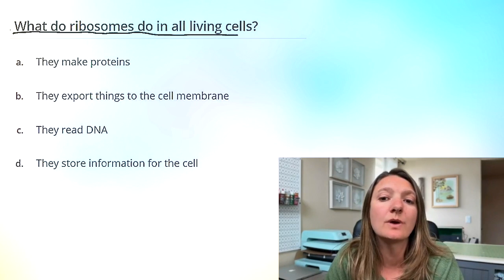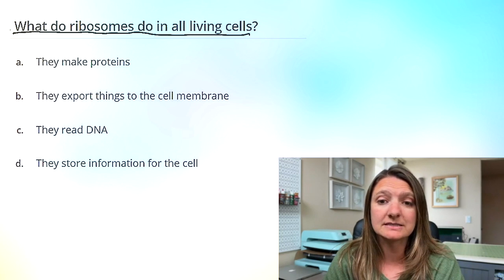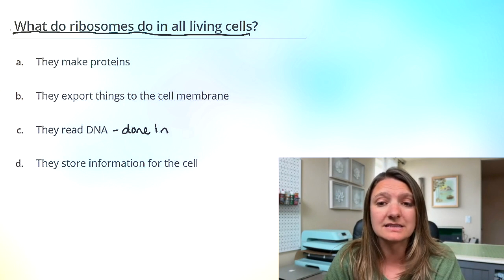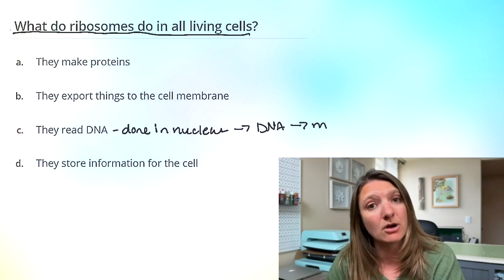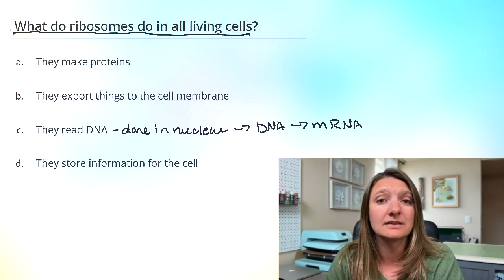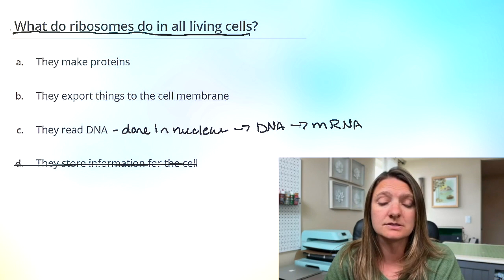Question two: What do ribosomes do in all living cells? A, they make proteins. B, they export things to the cell membrane. C, they read DNA — that is actually done in the nucleus, where DNA is changed over to mRNA. That mRNA then leaves the nucleus to go to the ribosome. D, they store information for the cells — that is also the nucleus, where the DNA is stored.